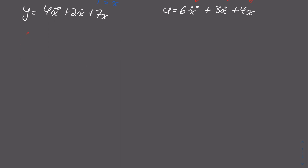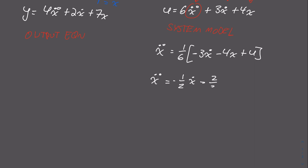We now have our output equation and our system model. To put this in matrix form, we start with the system model and separate the highest order derivative, which in this case is ẍ. Separating ẍ gives us 1/6 times (−3ẋ − 4x + u), which simplifies to ẍ = −(1/2)ẋ − (2/3)x + (1/6)u.